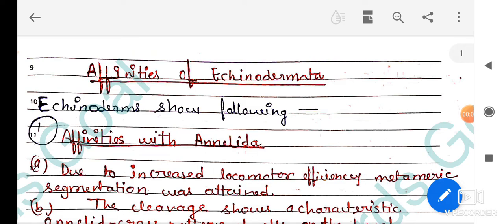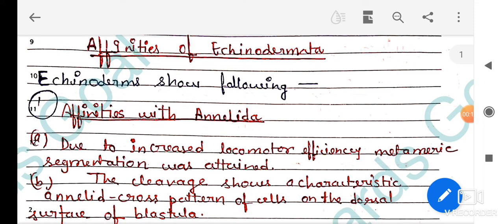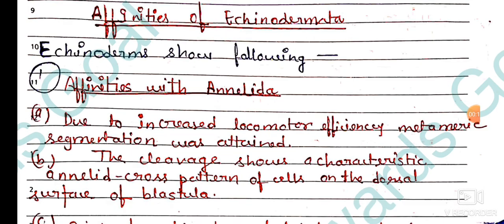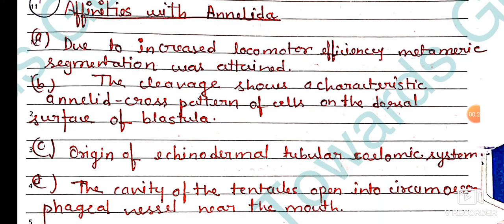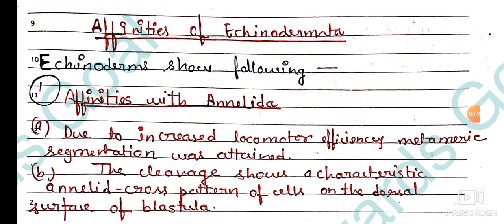Hi everyone, welcome back to my YouTube channel. Today's topic is affinities of Echinodermata, which is an important topic for your zoology, especially if you are reading non-chordates. We will see similarities of Echinodermata with lower phyla like Annelida and Hemichordates, as well as dissimilarities. First we will discuss the general characters of Echinodermata.